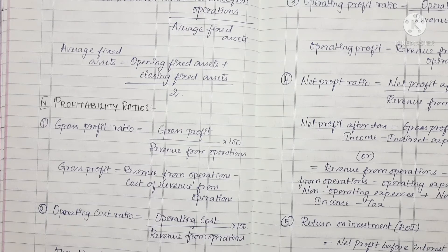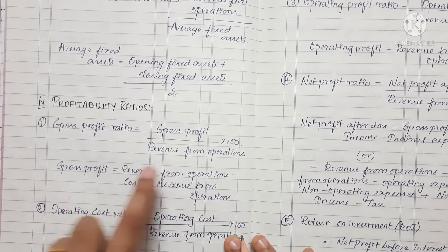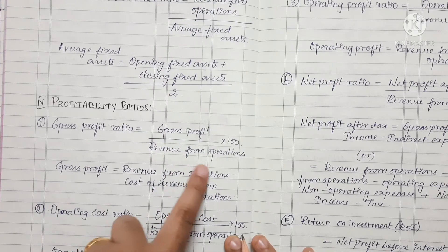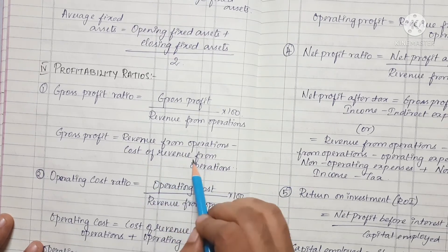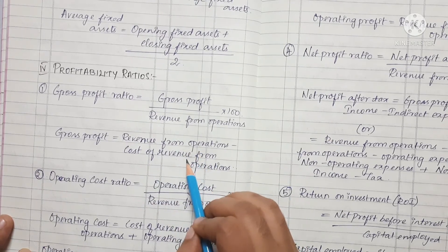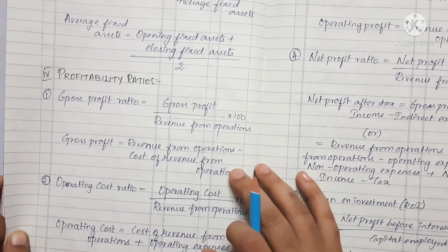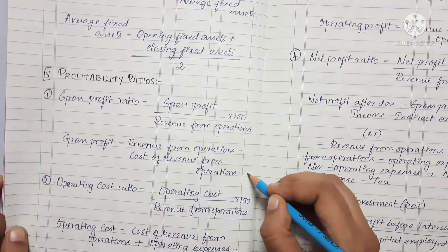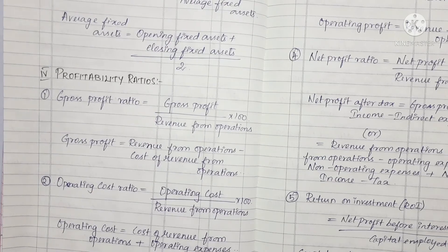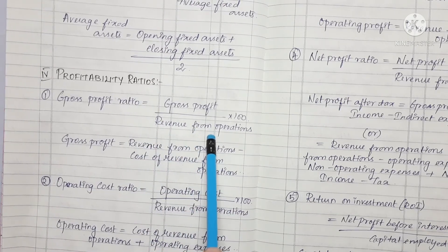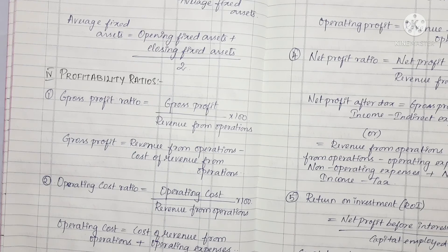Now we can see the Profitability Ratios. There are 5 profitability ratios. The first is Gross Profit Ratio, which equals Gross Profit divided by Revenue from Operations multiplied by 100. Gross Profit equals Revenue from Operations minus Cost of Revenue from Operations.